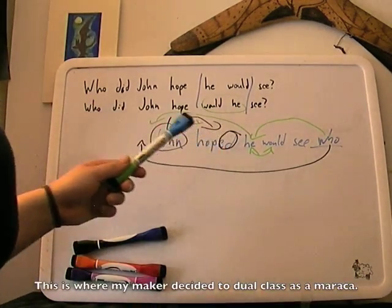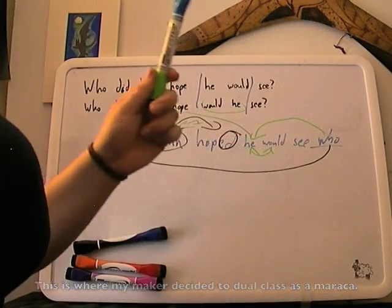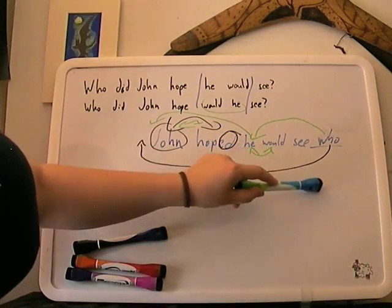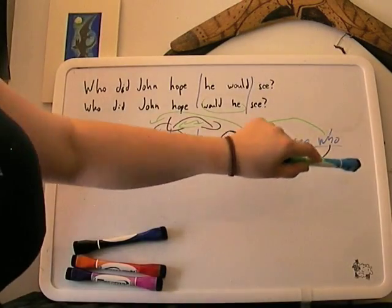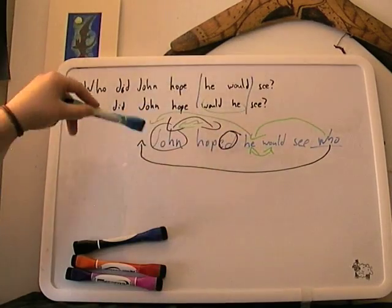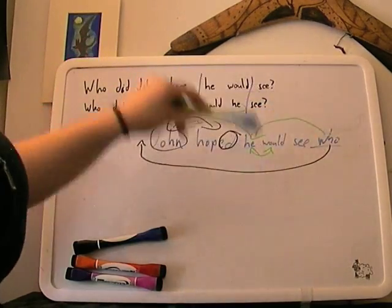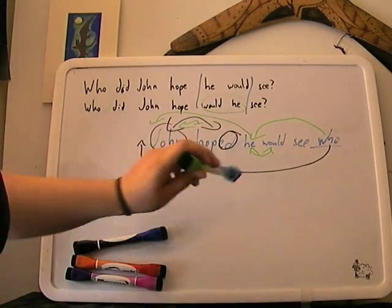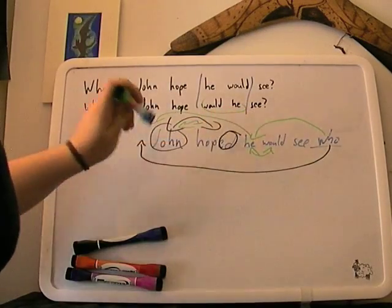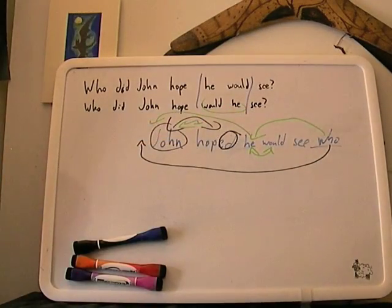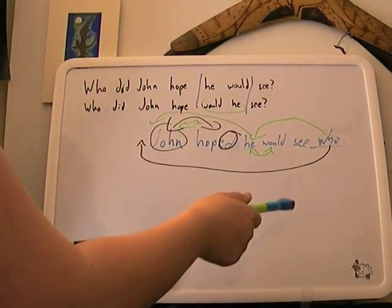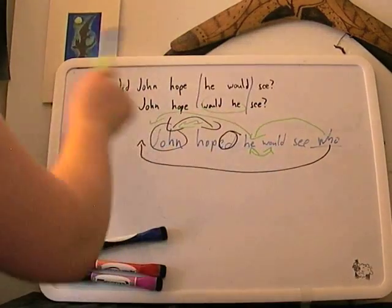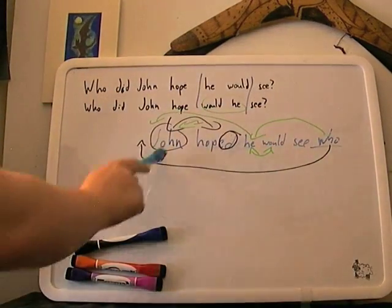There are languages where the question word just stays where it is — Chinese is one, I believe. But in English, there's something in these spaces that almost calls up the WH word. And apparently it is located at every clause, because if you did a longer sentence in Belfast with multiple clauses, it would switch at every single one as you go up — not just at the top, like it does in general English.